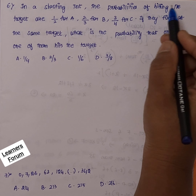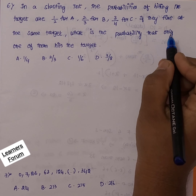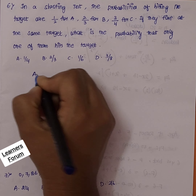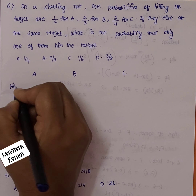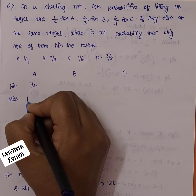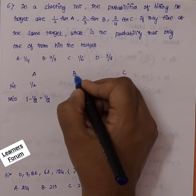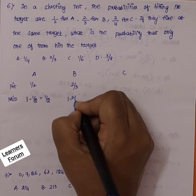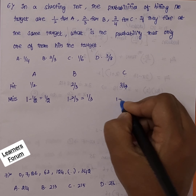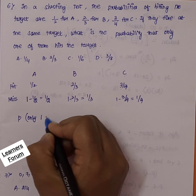Next question: in a shooting test, the probabilities of hitting the target are 1/2 for A, 2/3 for B, and 3/4 for C. If they fire at the same target, what is the probability that only one of them hits the target? Given these hitting probabilities, the missing probabilities are: A missing = 1 minus 1/2 = 1/2; B missing = 1 minus 2/3 = 1/3; C missing = 1 minus 3/4 = 1/4.